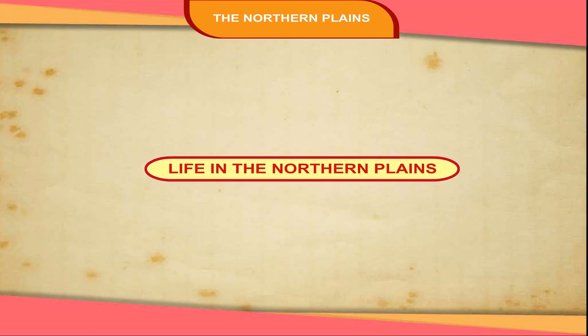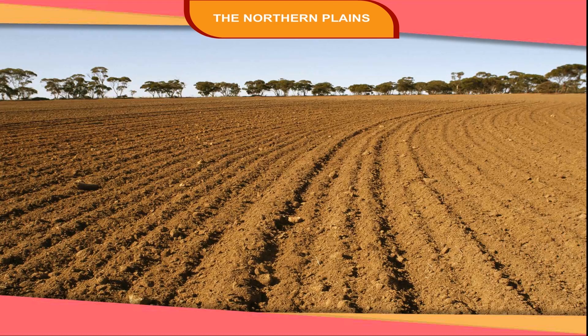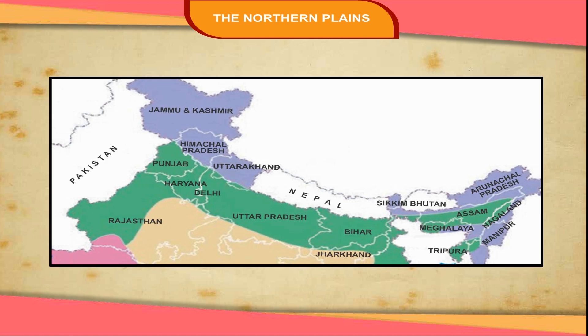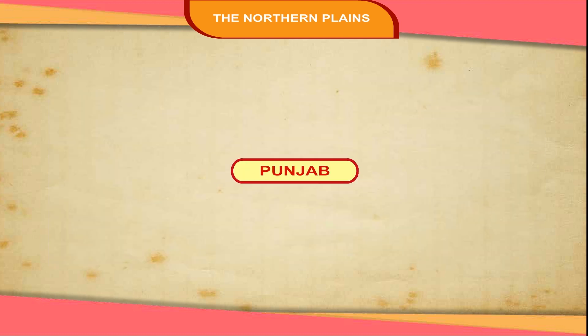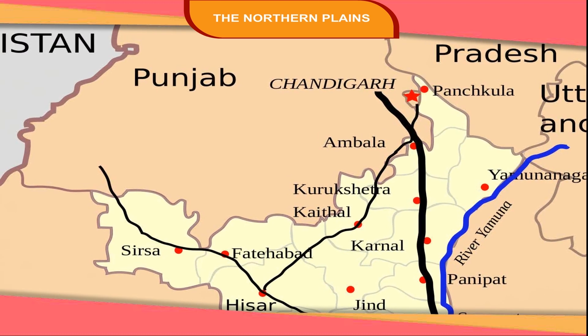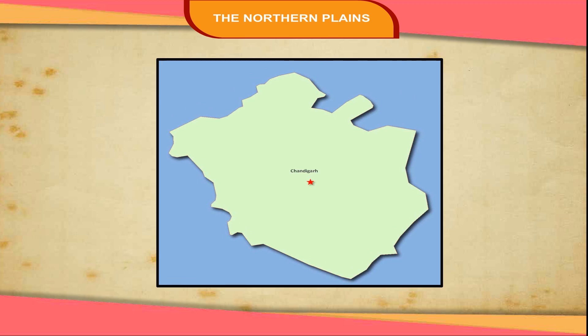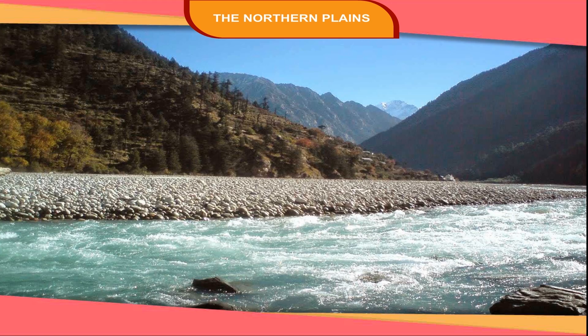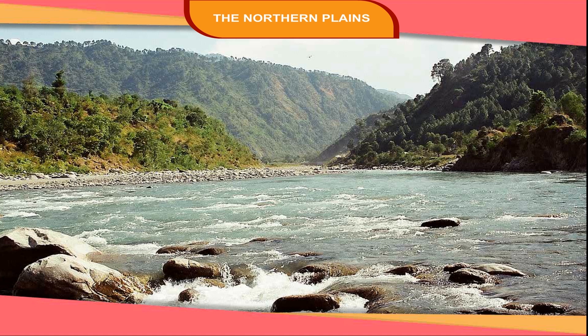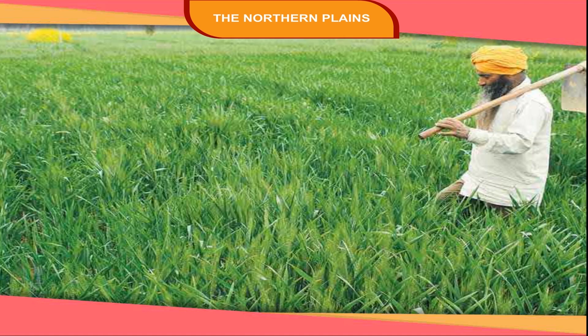The northern plains are flat and fertile, and many states lie in these plains. Punjab lies in the Satlaj Basin. Its capital is Chandigarh. It is watered by the rivers Satlaj, Bees and Ravi. Most of the people are farmers.